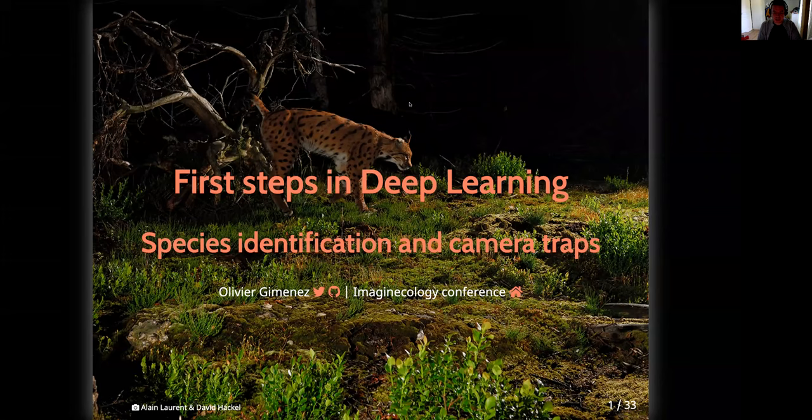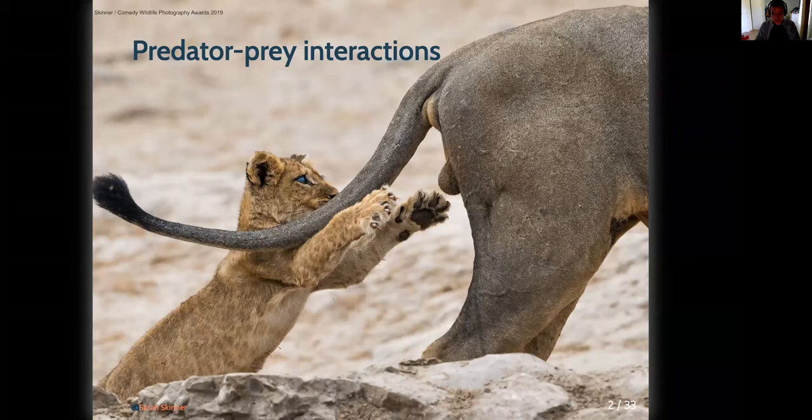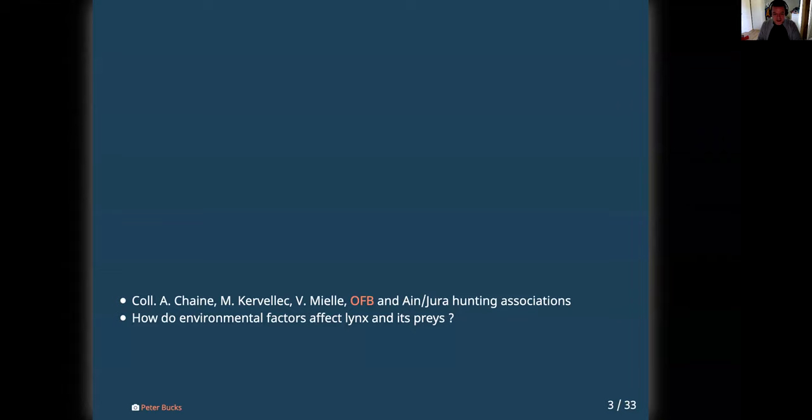Hi everyone, my name is Olivier Gimenez. I'm a researcher at the National Centre for Scientific Research in France, and I'm going to talk about my first steps in deep learning with the application to the identification of animal species on pictures taken with camera traps. I'm working a lot on predator-prey interactions these days — these are interactions between species that structure communities of large mammals.